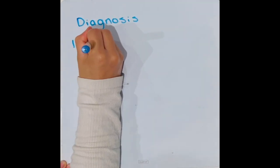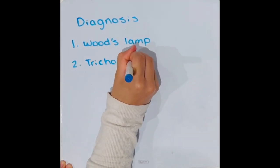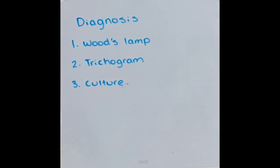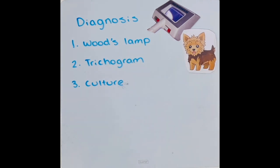Diagnoses can be made through three different methods. Wood lamp will fluoresce bright green under UV light. However, there may be issues regarding false negatives, as not all species will fluoresce, and also false positives due to dandruff.